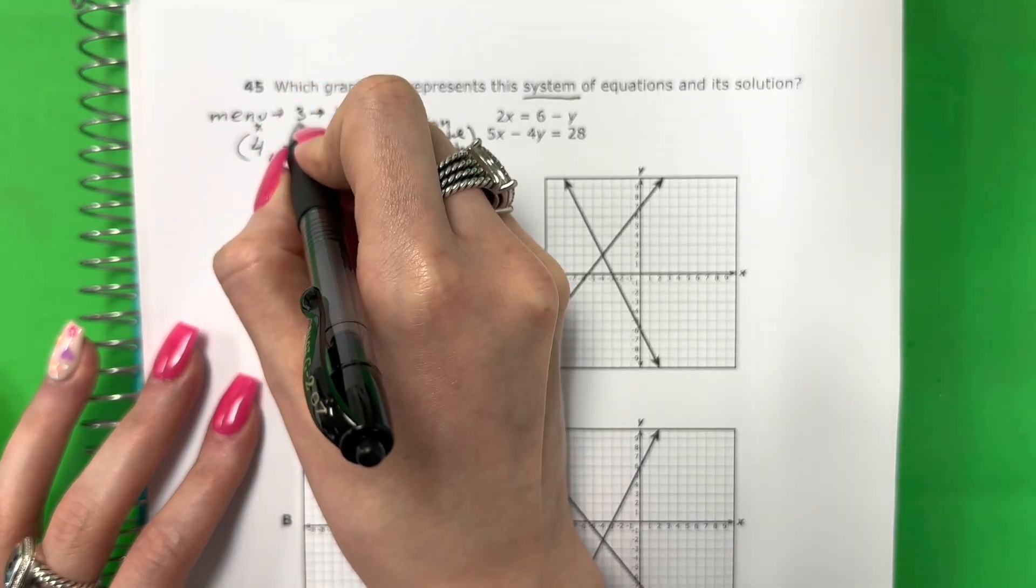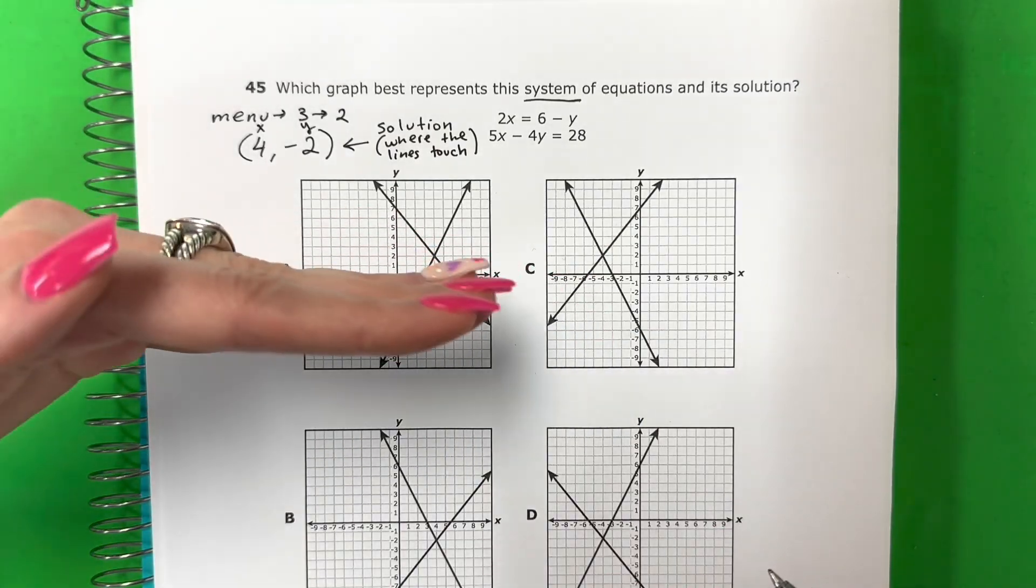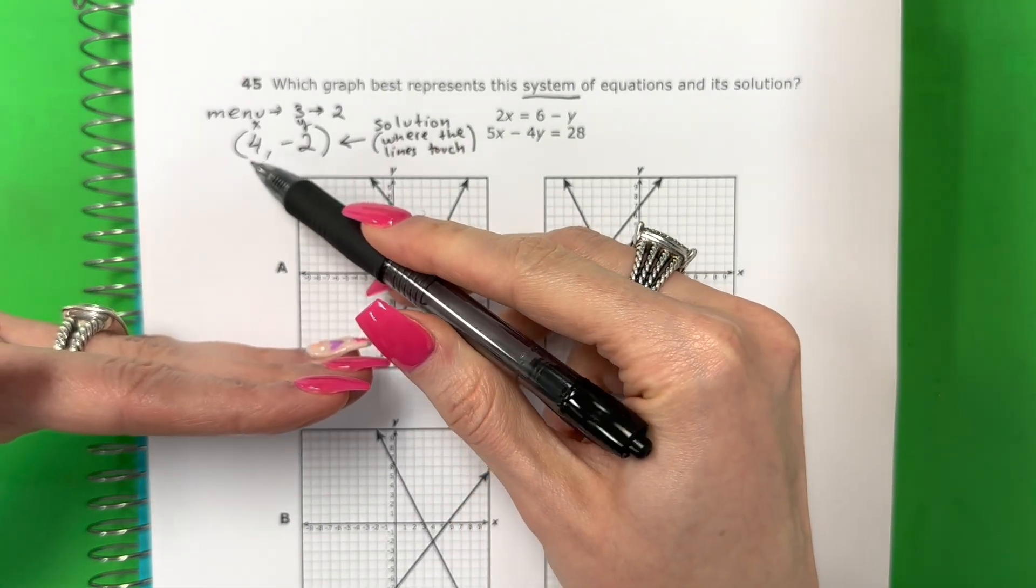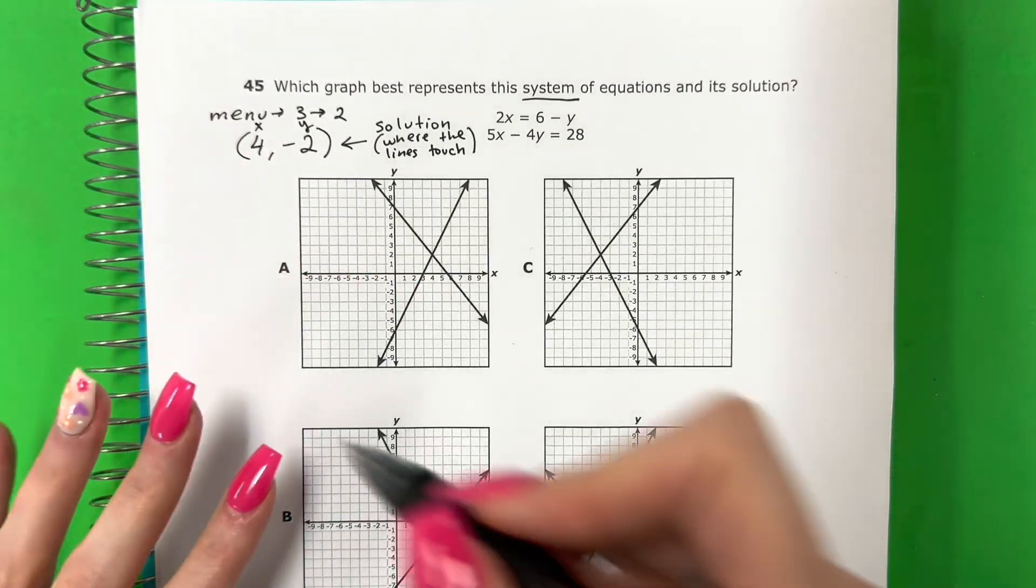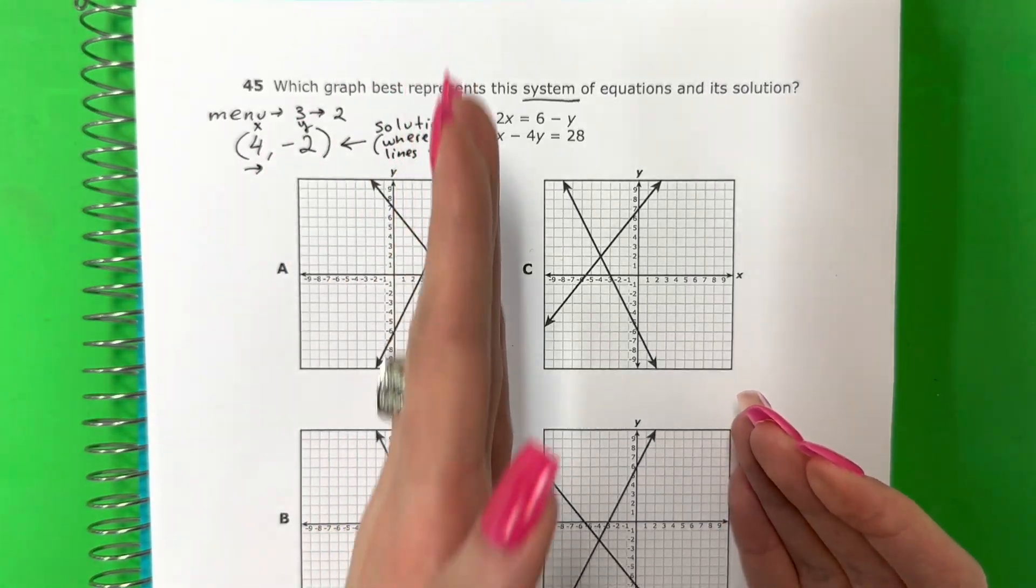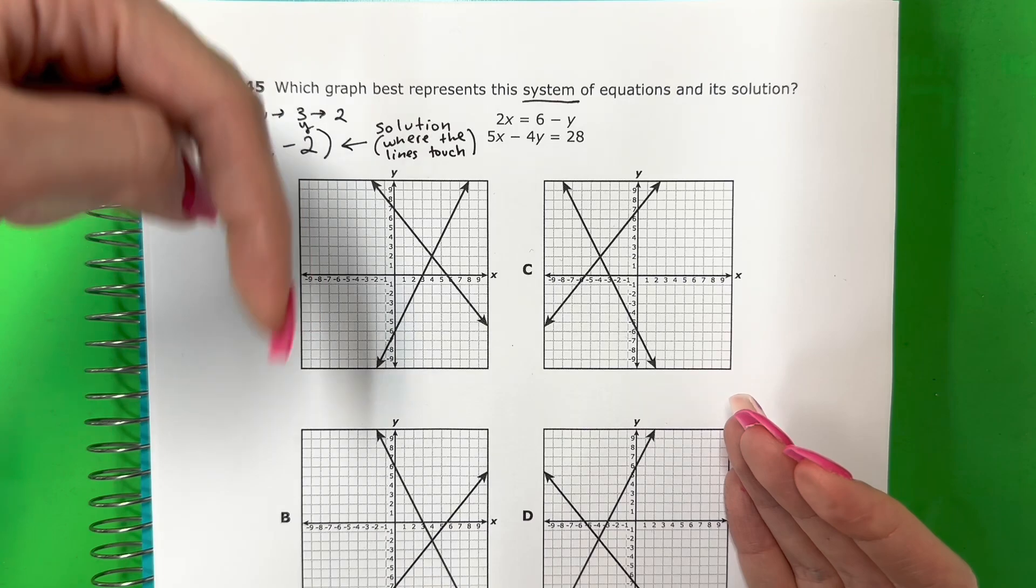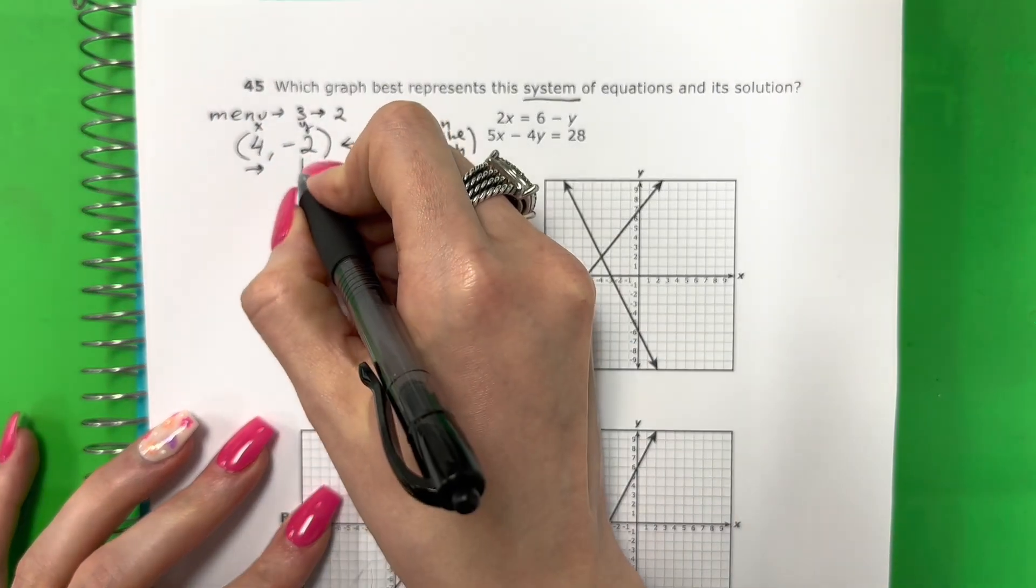So we're going to write here where the lines touch. ¿Dónde las líneas tocan? 4, negative 2. So this is X. This is Y. Remember, X is left and right. X es izquierda, derecha. This is positive, positivo. So that is going to be to the right. Es para la derecha. And Y is up, down. Y es arriba, abajo. This is negative. Es negativo. So that's going to be down. Es para abajo.